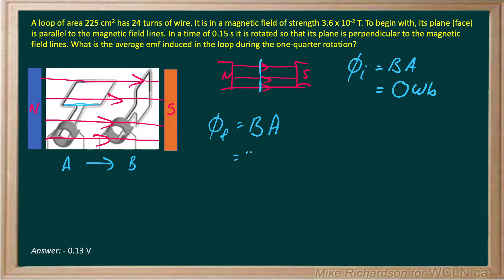So 3.6 times 10 to the negative 2 Teslas. Now my area is 225 centimeters squared. And I don't like centimeters, so I have to get rid of them. Put the centimeters on the bottom. I want meters out of that - that's the standard unit in physics. There are 100 centimeters in one meter. That only is going to cancel one of these centimeters off, so I have to square everything.